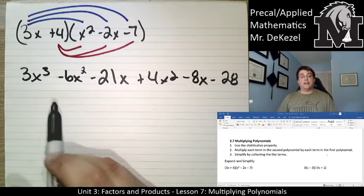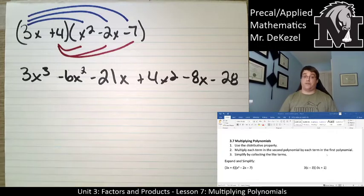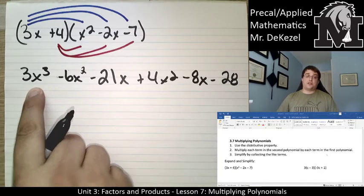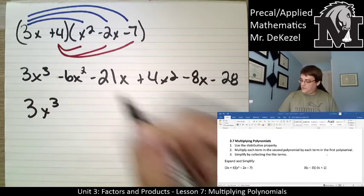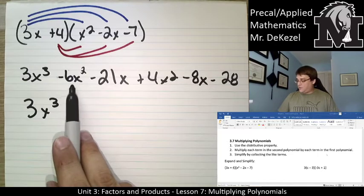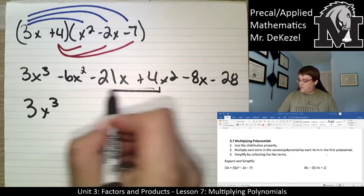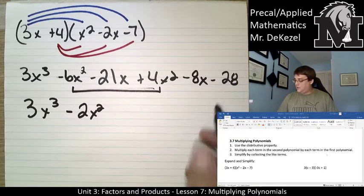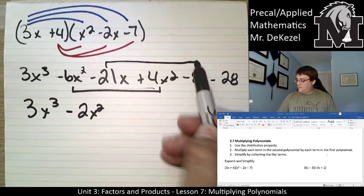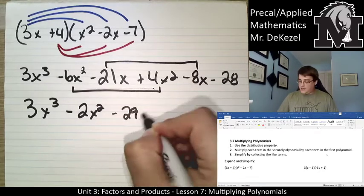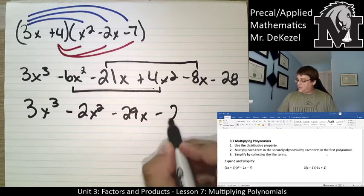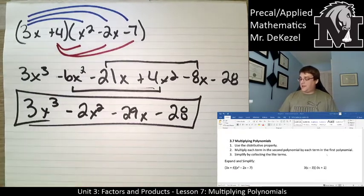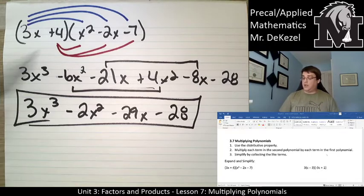We are then going to combine like terms so that we are simplifying. This is the only x cubed we have. So we're going to keep it 3x cubed. We have these two x squareds minus 2x squared. We have these x's, minus 8 and minus 21, that's minus 29x. And then minus 28 is all by itself. So this is our expanded and simplified version of the brackets up top.